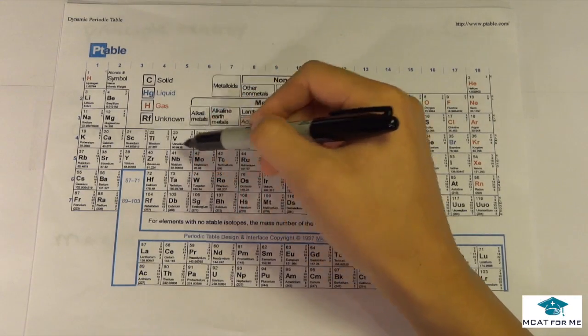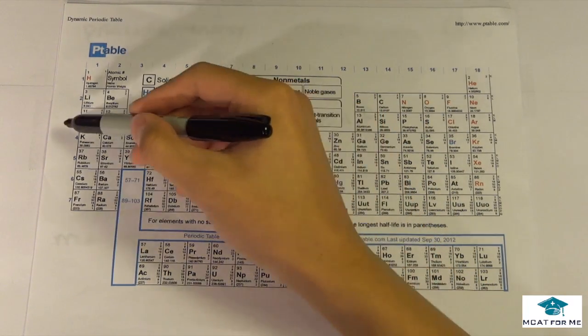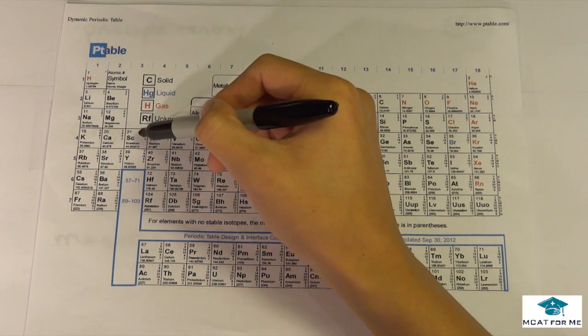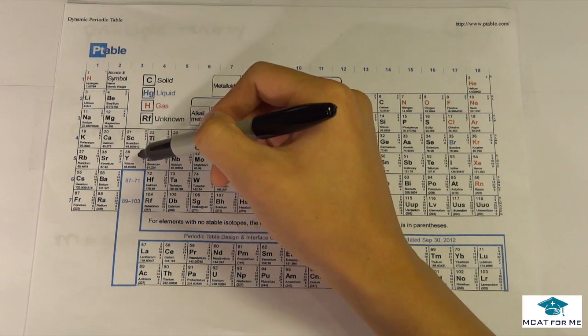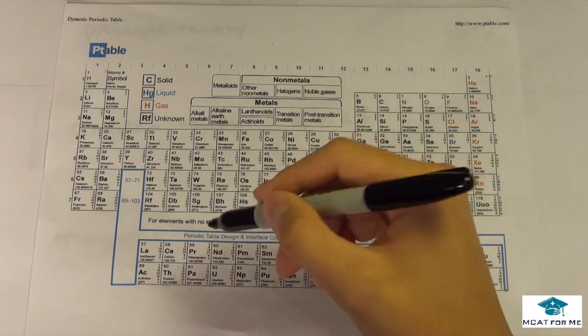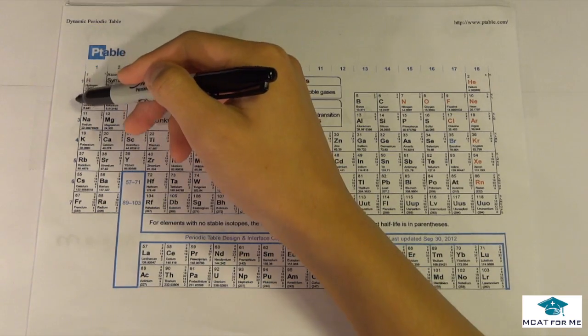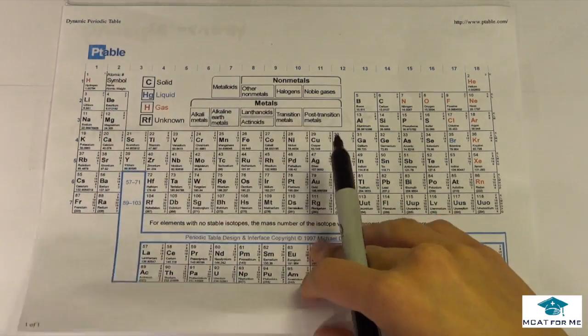But we have to look at the d block, this is kind of unique. Instead of being 4, because we have a period of 4, this would actually be 3. This would be a 3d and a 4d as well. And the same thing with the f, the f would start at 4f and 5f. But everything else will follow these numbers on the side of the periodic table, which you will be given.